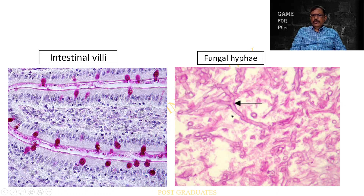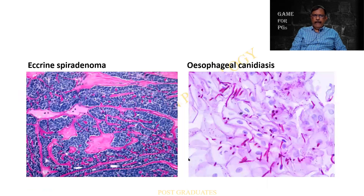The Gomori Methenamine Silver is another stain that can be used as a supplement. The PAS will be staining the dead hyphae, whereas the Gomori Methenamine Silver will be staining the live as well as the dead fungal hyphae. This is the basement membrane and the matrix of the eccrine spiradenoma that can be stained positive with PAS. Esophageal candidiasis — many a case we find it is suspected, you do a PAS and find the pseudo hyphae strongly positive.